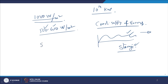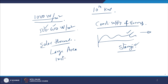Solar thermal energy first of all requires a large area because the intensity of the energy is not very high. It requires large area instrumentation, and a solar tracking system is also sometimes required to tap the solar energy. But the benefit of solar energy is it does not contaminate the environment.